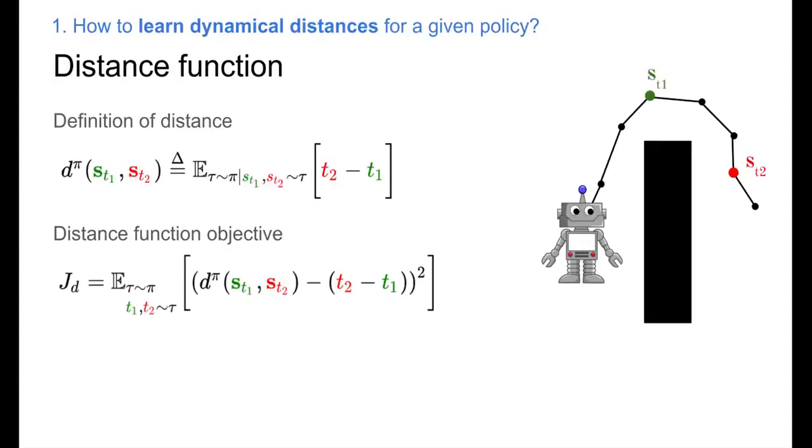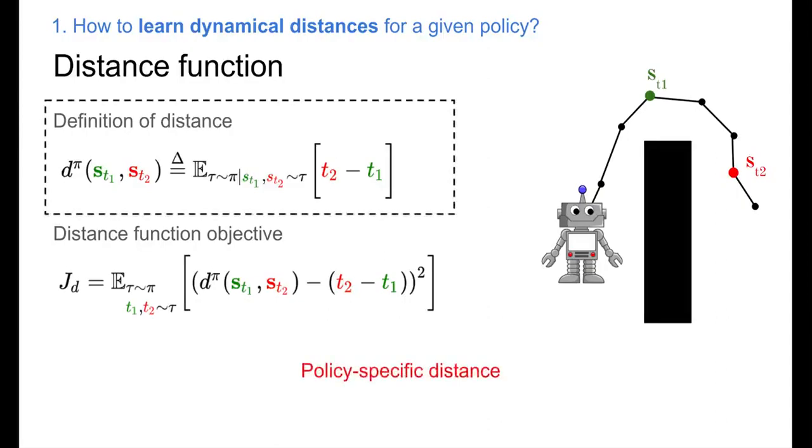Let's start by first defining the distance function and its learning objective. We define the distance as the expected cumulative cost between two states under our current policy pi. It's important to note that the distance function is conditioned on the policy. For example, if the policy is conditioned on a goal, this quantity describes how many time steps this specific goal-conditioned policy needs to reach that goal.